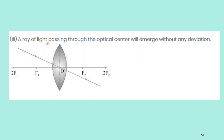Third rule: a ray of light passing through the optic center will emerge without any deviation. If a ray of light passes through the optic center, refraction takes place through the optic center and it emerges in the same path without any deviation — a straight line through the optic center.